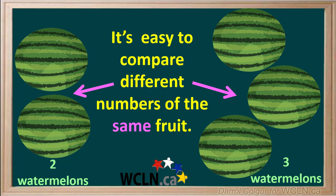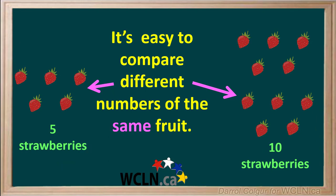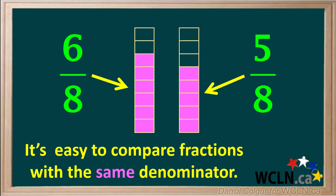2 watermelons is obviously less than 3 watermelons, and 5 strawberries is less than 10 strawberries. Just like comparing the same fruits, it's also easy to compare fractions with the same denominator. Here we're comparing eighths — we see, for example, that 6 eighths is larger than 5 eighths.